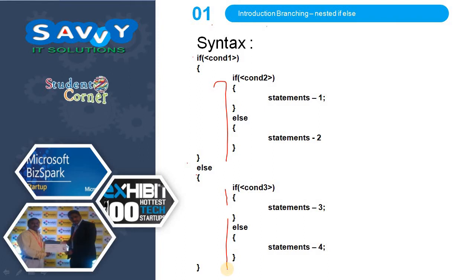So here what exactly we need to understand: if condition one is true and condition two is true, then statement one will be executed. If condition one is true but condition two is false, then statement two will be executed. If condition one is false, then condition three will be checked — if true, statement three is executed. If both condition one and condition three are false, then statement four will be executed. This is the hierarchy it follows.